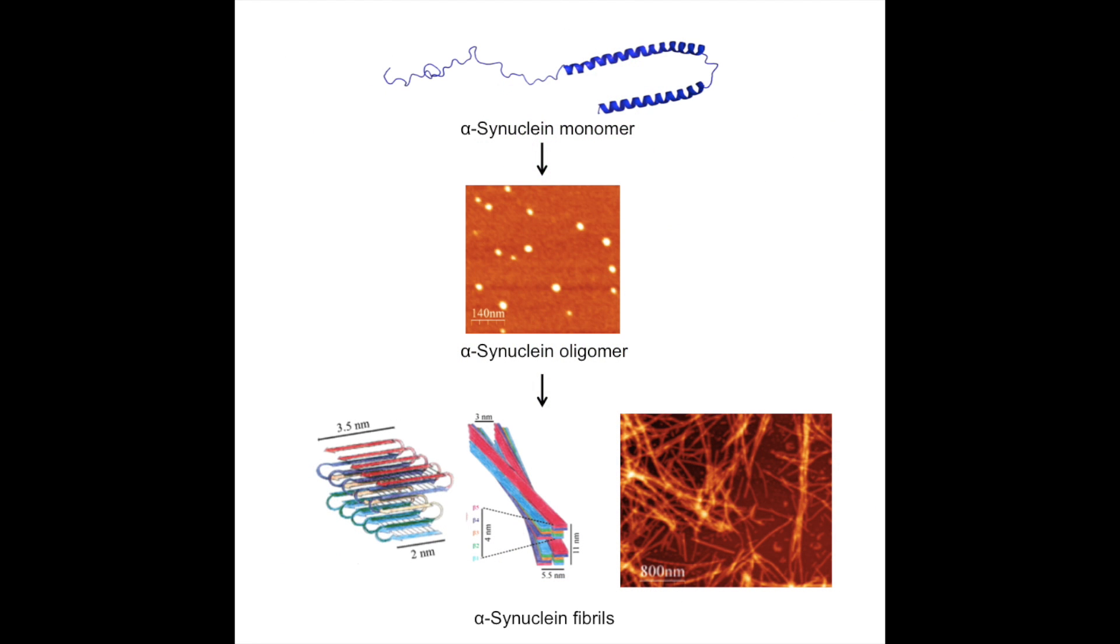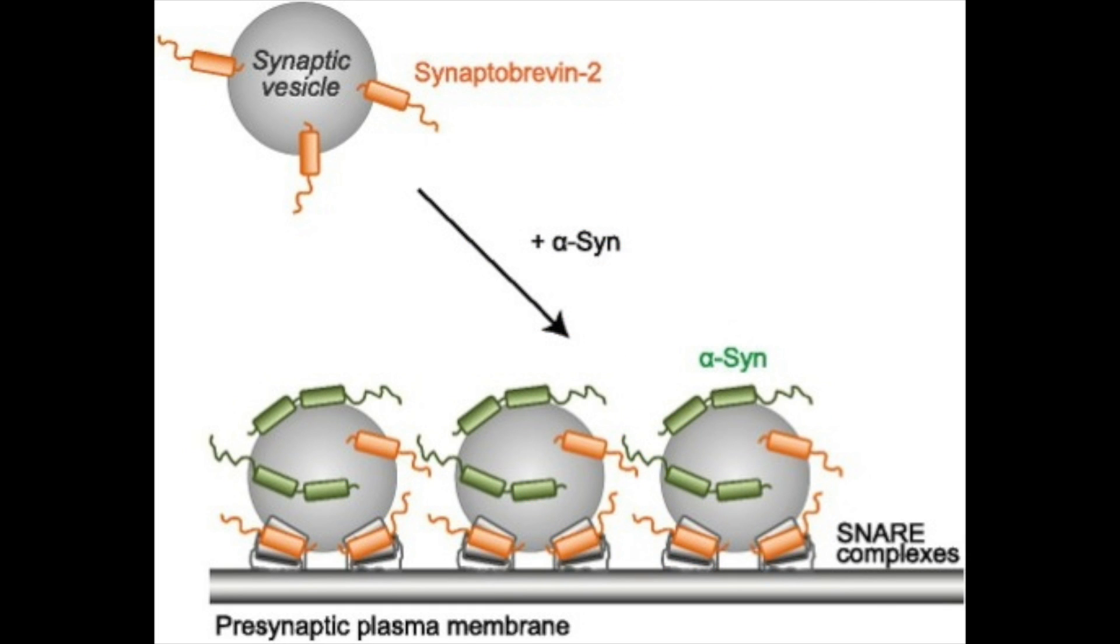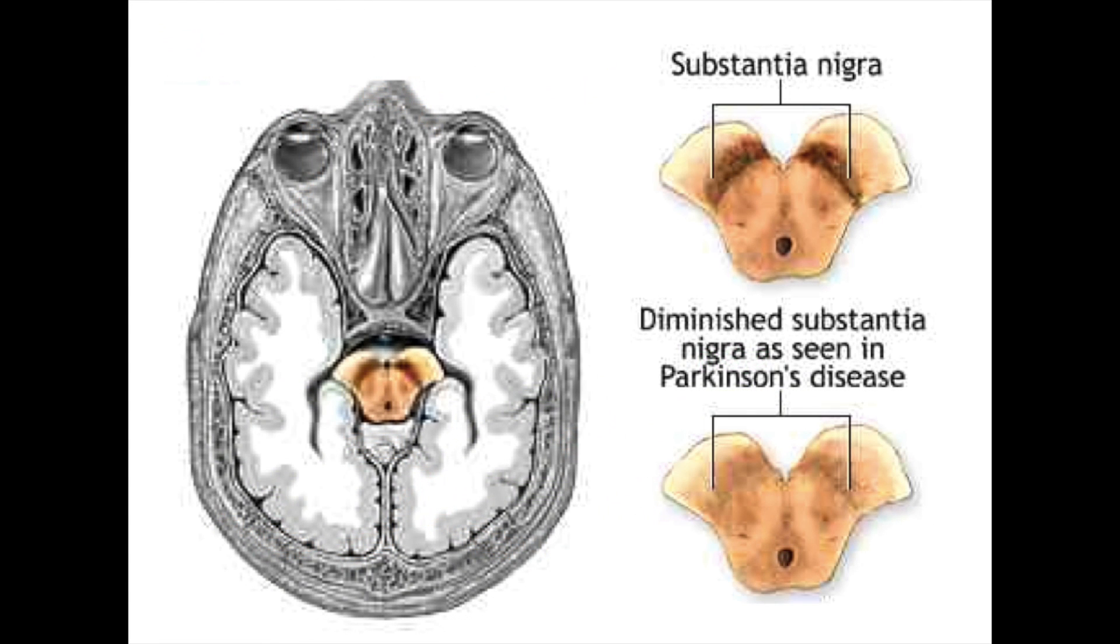Alpha-synuclein in Parkinson's disease provides an example of a protein that misfolds into amyloid fibrils in neurodegenerative disease. Alpha-synuclein is a presynaptic protein enriched in the brain whose function is not entirely understood, but is thought to be involved in synaptic vesicle fusion. Its aggregation is thought to cause degeneration of dopaminergic neurons.